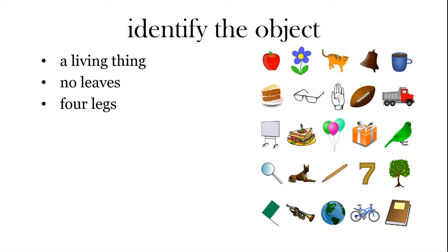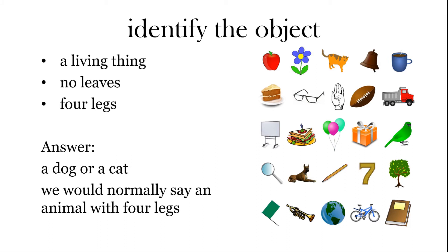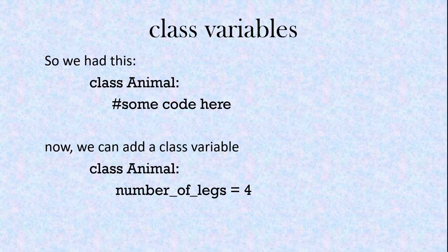We can identify objects by some characteristics about them. Here's an example: something that's a living thing, hasn't got leaves, and has four legs. So what do you think that is? Well, looking at the objects, that's probably either the cat or the dog. So we'd say an animal with four legs. That object is in the animal class, and a characteristic of an animal is the number of legs. So we had class animal, and now we can add a variable: number_of_legs equals four.